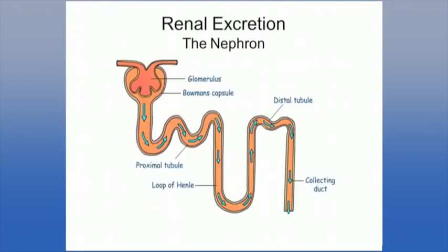To appreciate urinary excretion of drugs, we return to anatomy. As you know, healthy individuals possess two kidneys. Each kidney is made up of an individual functional unit referred to as the nephron. Each kidney contains, somewhere in the ballpark of, a million nephrons. This independent functioning unit is what we're going to focus on.